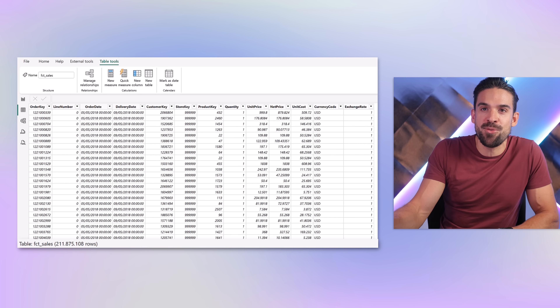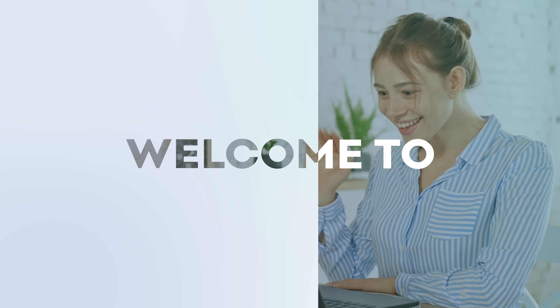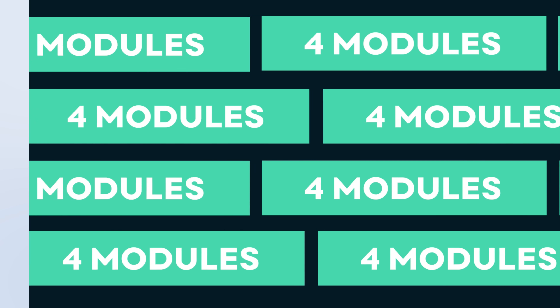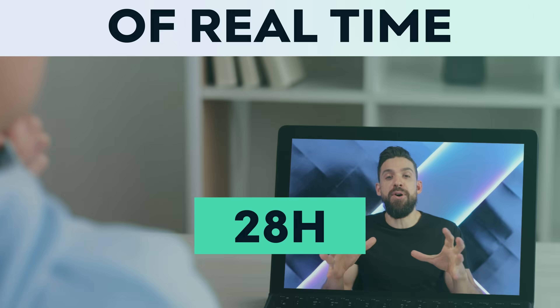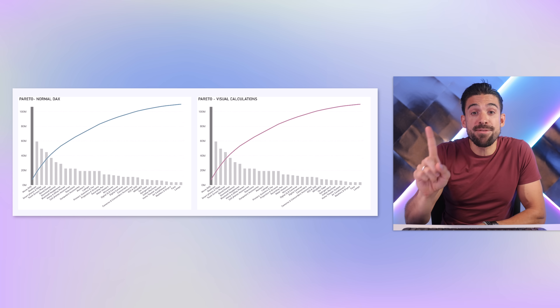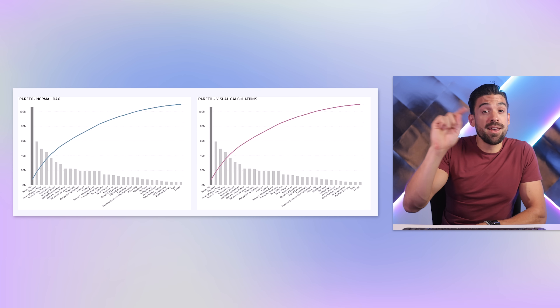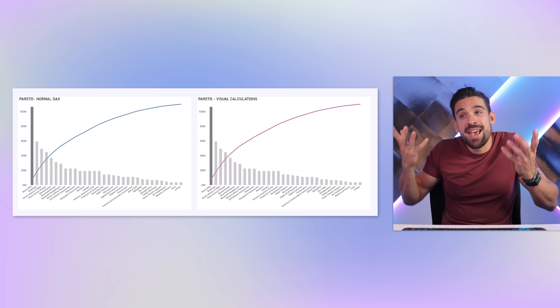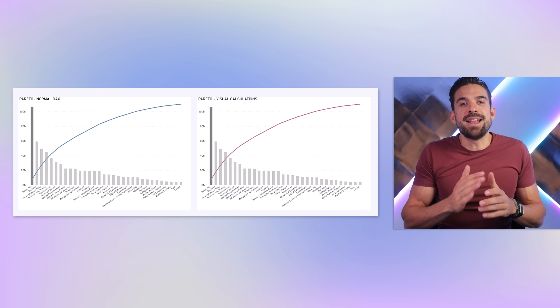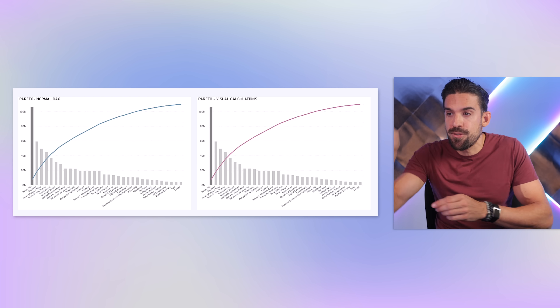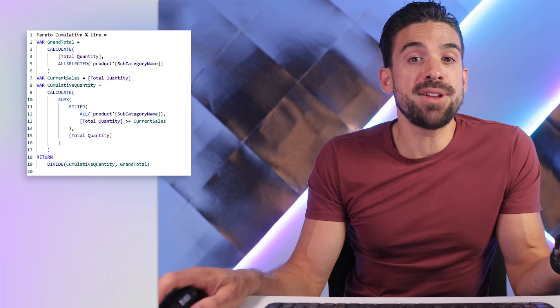In the report, we have two identical visuals. On the left, a traditional DAX measure is used to draw the Pareto line, and on the right, a visual calculation is used. The Pareto line shows the cumulative percentage of quantity sold for the different subcategories.